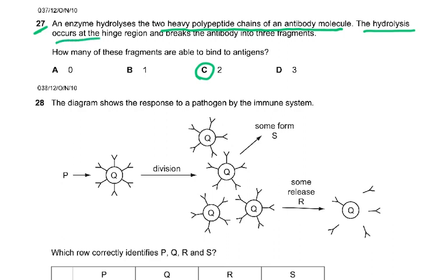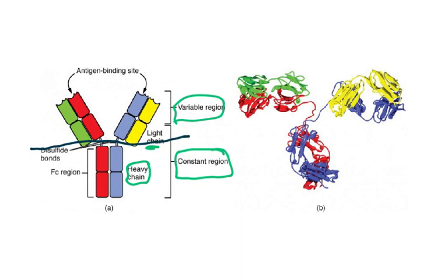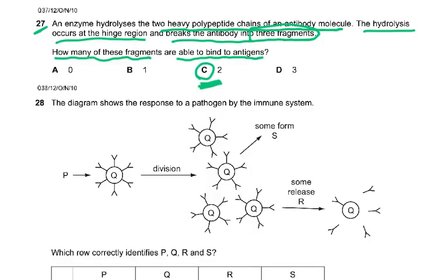Question 27: an enzyme hydrolyzes the two heavy polypeptide chains of an antibody molecule. The hydrolysis occurs at the hinge region and breaks the antibody into three fragments. How many of these fragments are able to bind to the antigen? Understanding the diagram: heavy chains, light chains, variable region, constant region. Breaking at the hinge region gives three fragments — two of which contain the antigen-binding sites. So the answer is two fragments are able to bind to the antigen.